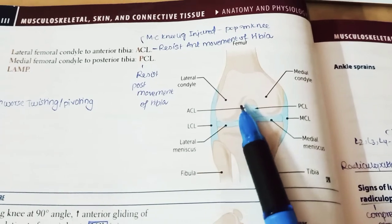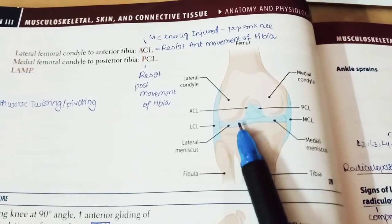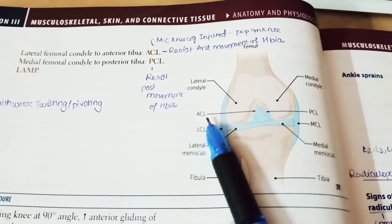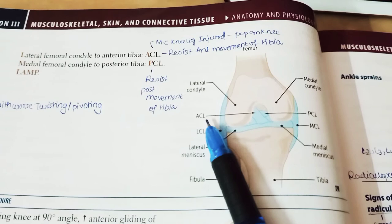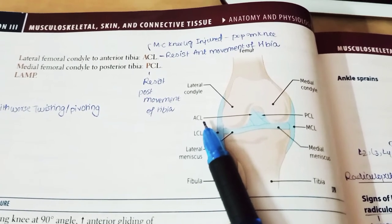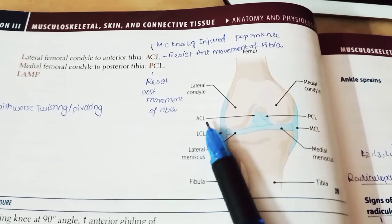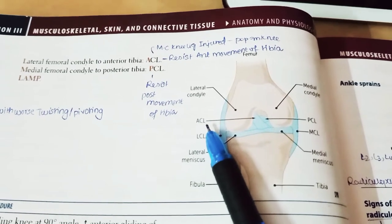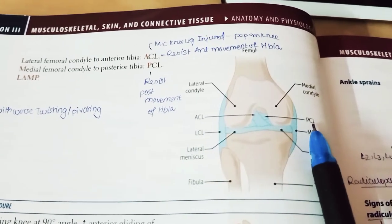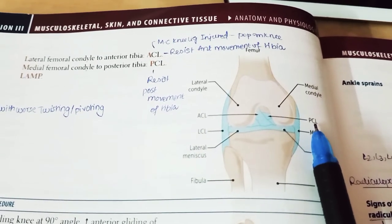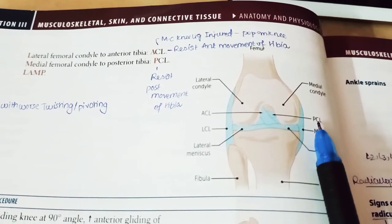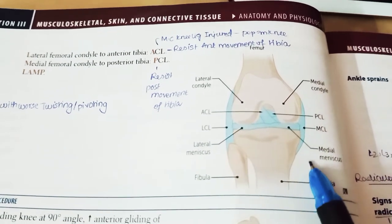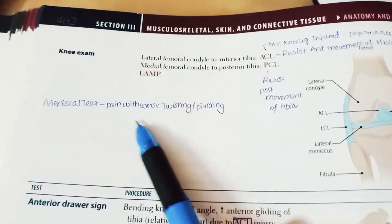You can see they both cross each other. The ACL is the most common knee ligament that is injured, and it resists anterior movement of the tibia. The PCL resists posterior movement of the tibia.